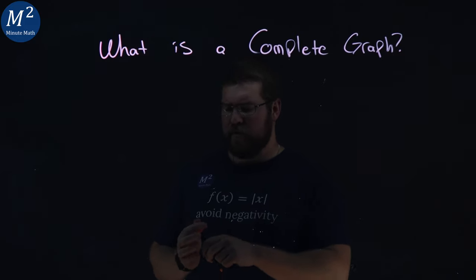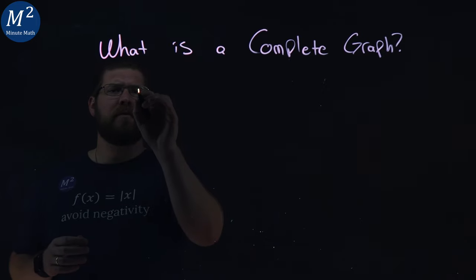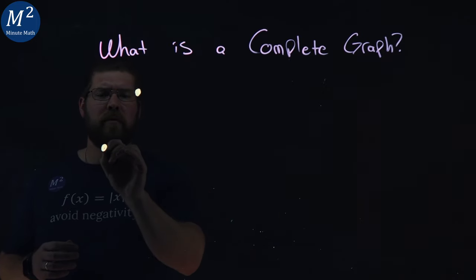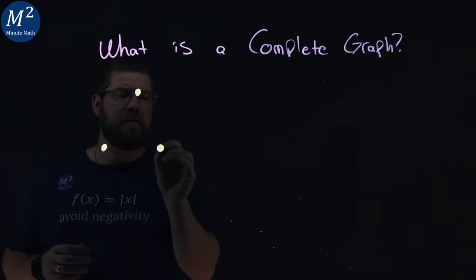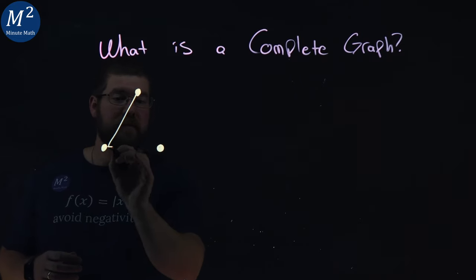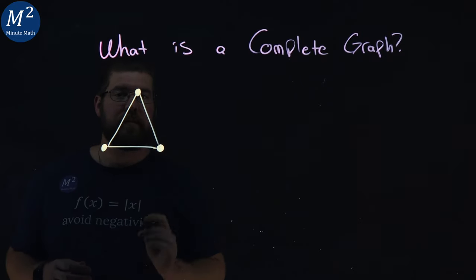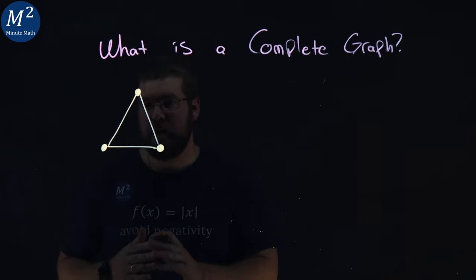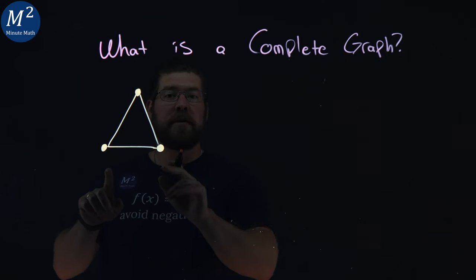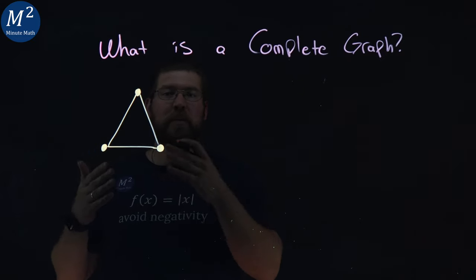Let's see an example of this. An easy one is going to be a triangle. We have three vertices here and they're connected as such. Each vertex is connected to every other vertex with a single path.